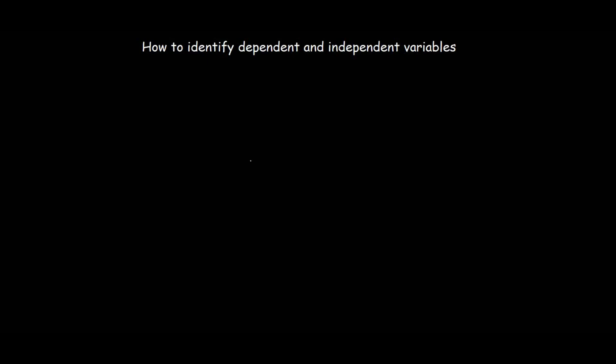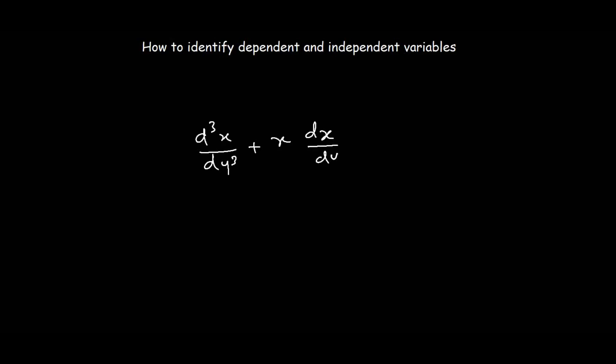In this lesson, we are going to learn how to identify dependent and independent variables in differential equations. So let's look at the first example. We have the differential equation: the third derivative of x with respect to y, plus x multiplied by the first derivative of x with respect to y, minus 4xy equals 0.